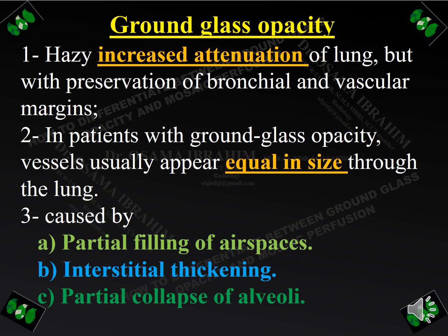What is ground glass opacity? It is a hazy increased attenuation — meaning white — of the lung, but with preservation of bronchial and vascular margins, to distinguish it from consolidation which obscures the vascular margins. In patients with ground glass opacity, vessels usually appear equal in size throughout the lung. The causes include partial filling of air spaces, interstitial thickening, or partial collapse of alveoli.